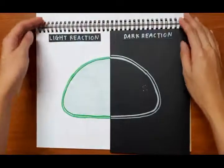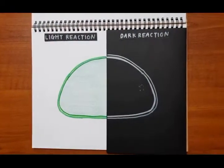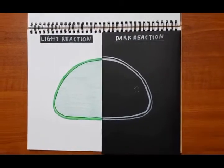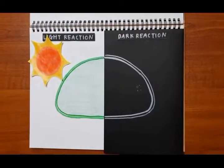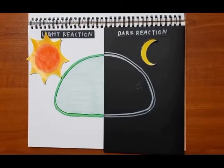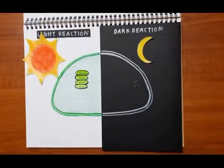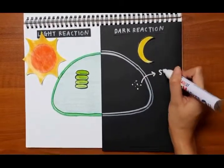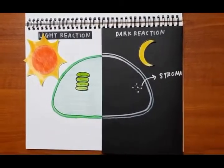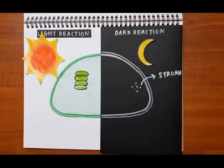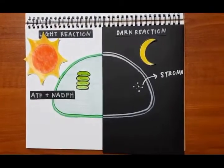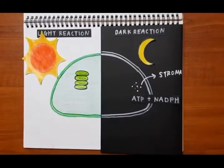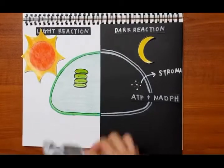Now let's differentiate between light and dark reactions. The light reaction requires a source of light; the dark reaction does not. The light reaction happens in the grana; the dark reaction happens in the stroma. The light reaction produces ATP and NADPH; however, the dark reaction uses ATP and NADPH to produce glucose.